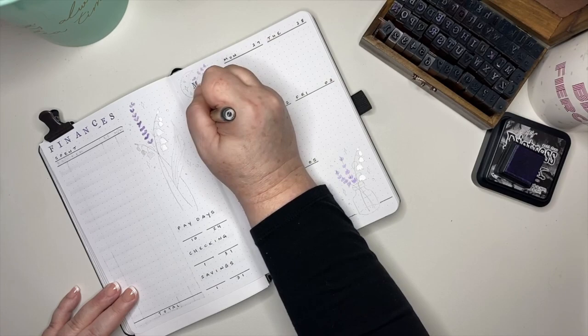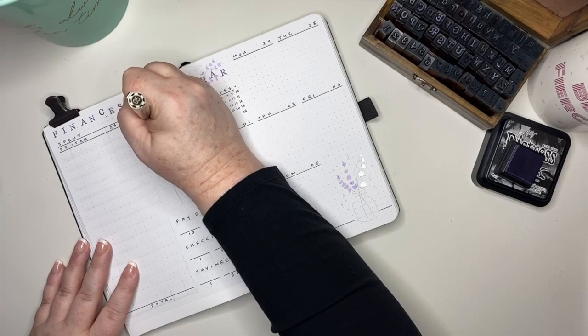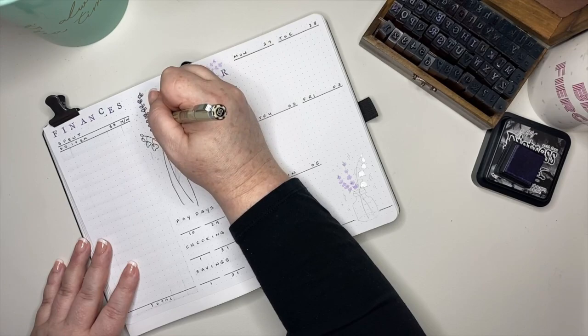And then in the bottom right corner of that page, he's got a place where he can indicate the amount that he gets on each of his pay days for March, as well as the beginning and ending balances for both his checking and his savings account.